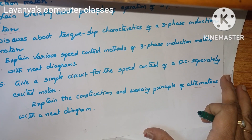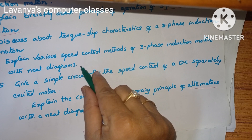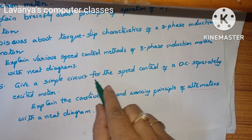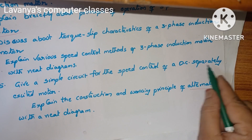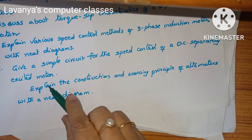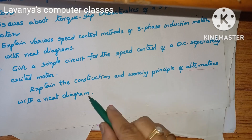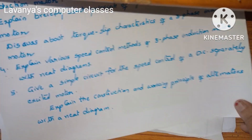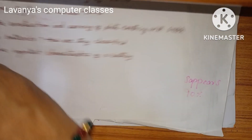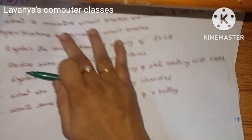Next, explain various speed control methods of a three phase induction motor with a neat diagram. Give a simple circuit for the speed control of a DC separately excited motor, and explain the construction and working principles of alternators with a neat diagram. So these are the important questions for unit 4.